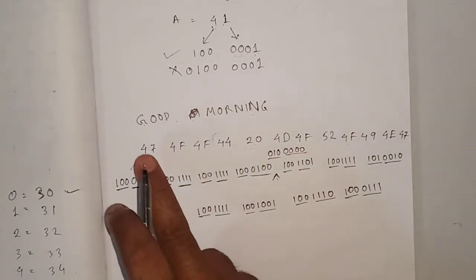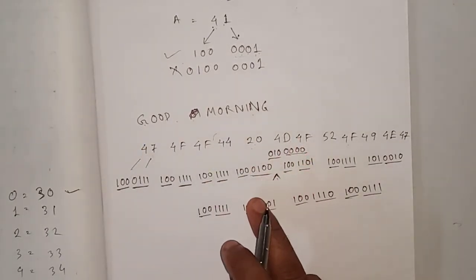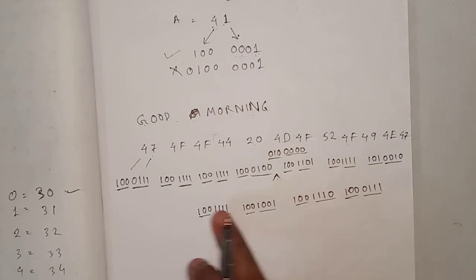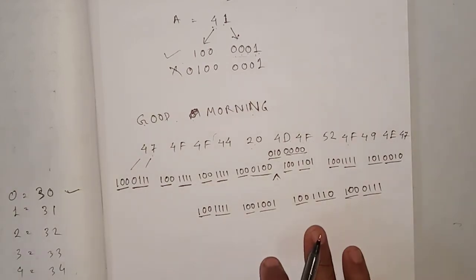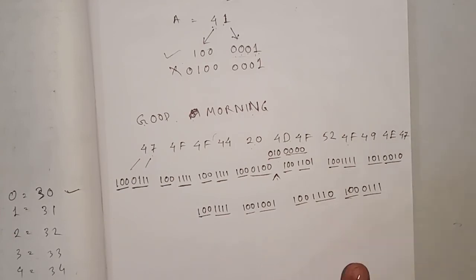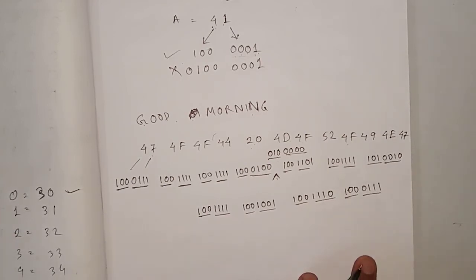So when I am typing 'Good Morning' in a computer, the computer understands this binary representation. This is the mechanism and formula applied. There are different formulas, but this is the easiest formula to encode an English message to computer language.